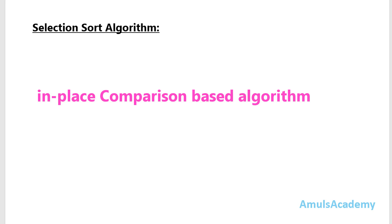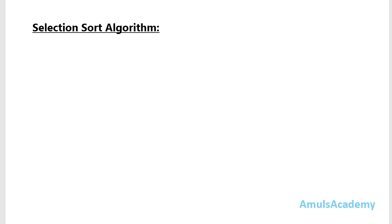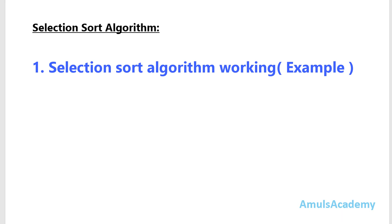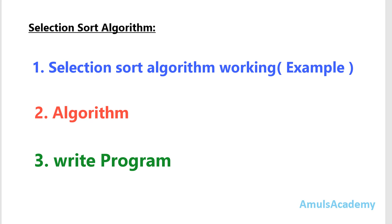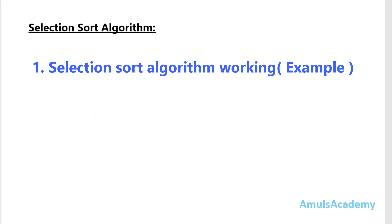Selection sort algorithm is a simple, in-place comparison-based algorithm. In this algorithm we need to compare the numbers and place them in the correct position. I will explain the selection sort algorithm by taking one example, then we will discuss the algorithm, and after that we will write the program. This video will be lengthy so I will divide it into two parts — in this tutorial we discuss the example and algorithm, and in the next tutorial we discuss the Python program.